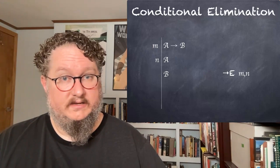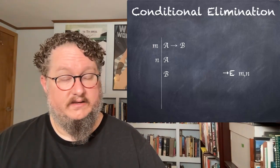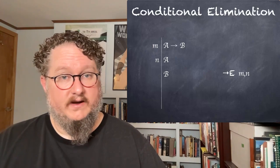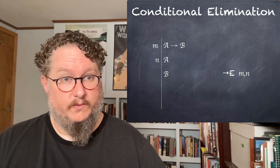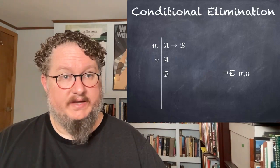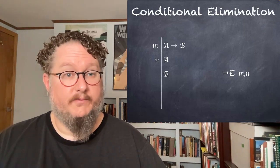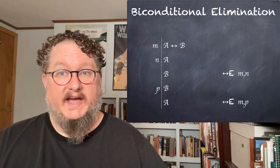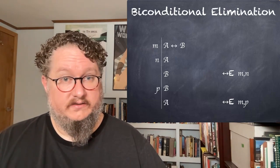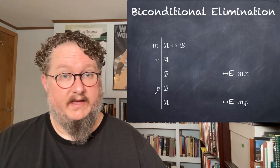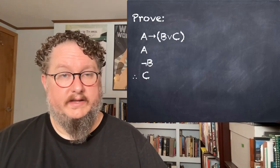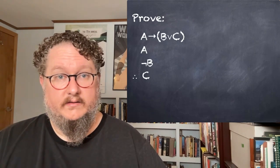We also have a conditional elimination rule. Whenever you have 'if A then B' and A, you can derive B — which makes sense from the truth table, since whenever A is true B also has to be true. I'm not going to give you the conditional introduction rule yet, because that's an indirect proof rule we'll cover in the next lecture. Biconditional elimination is also a direct proof rule: whenever you have A↔B and one side — say A — you can derive B, and vice versa.